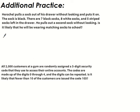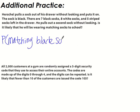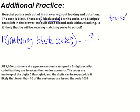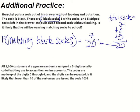Let's find the probability of matching black socks. There are seven black socks left. The total socks remaining is 7 plus 8 plus 5, which equals 20. So the probability of matching black socks is 7 out of 20.